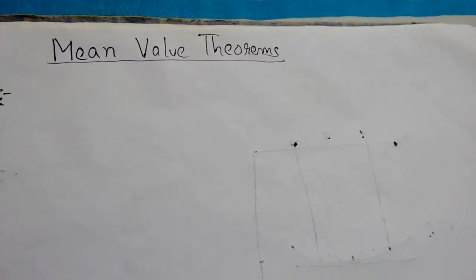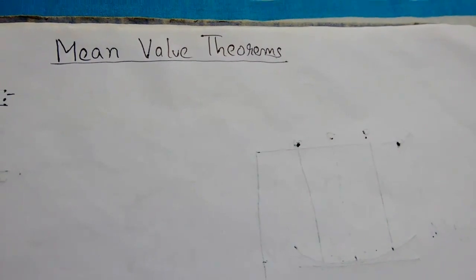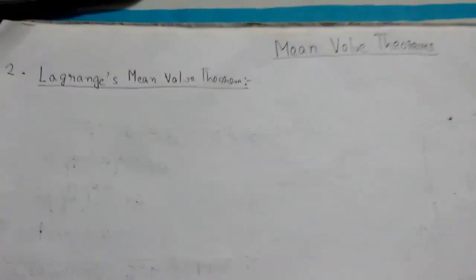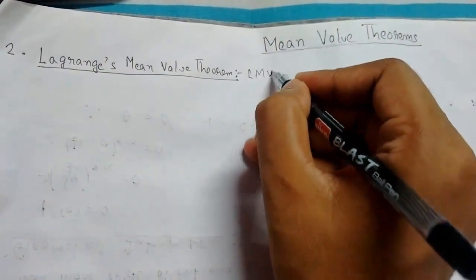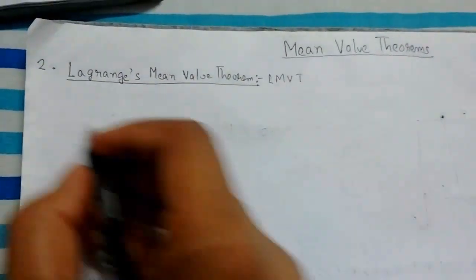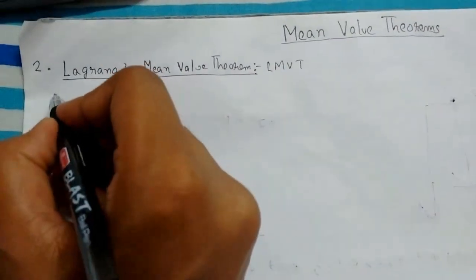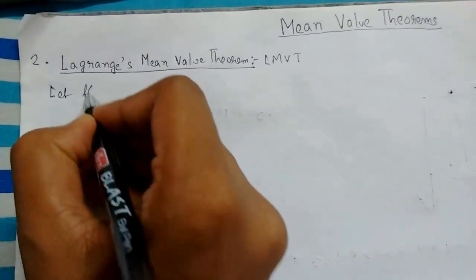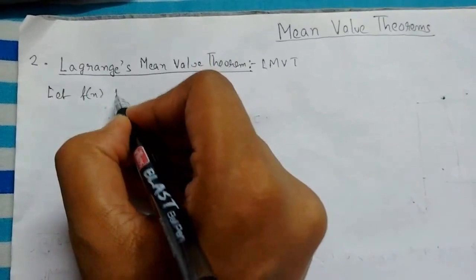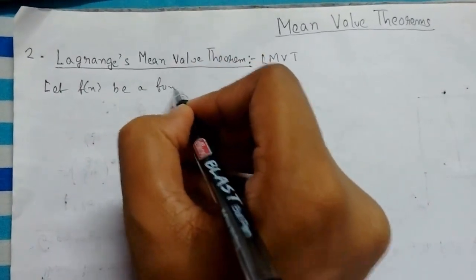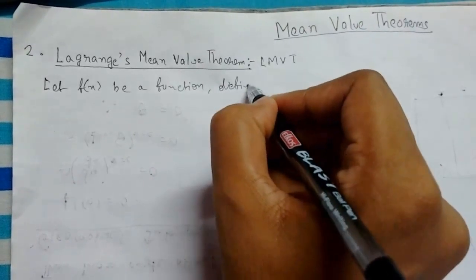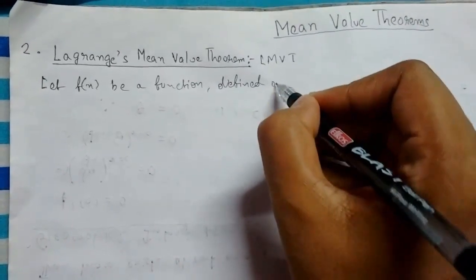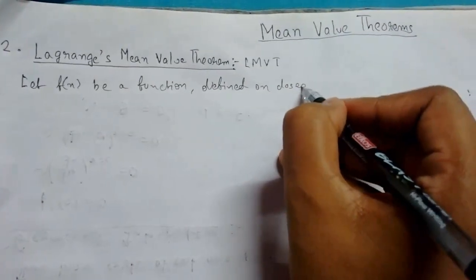Welcome everybody. In this video lecture we'll be continuing our mean value theorems, number two, which is Lagrange's Mean Value Theorem or LMVT in short. So let us define our theorem. Let f(x) be a function defined on closed interval [a, b].